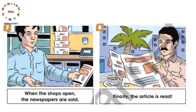الصورة الثامنة: finally the article is read - أخيراً المقال يقرأ. لو أردنا الجملة في المبني للمعلوم نقول: the reader reads the article. لما نحولها مبني للمجهول: نأخذ المقال نحطه في بداية الجملة، نضع verb to be is، ثم التصريف الثالث للفعل read، فتصبح: the article is read. كل الجمل في المبني للمجهول وعرفنا طريقة التحويل.